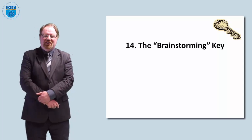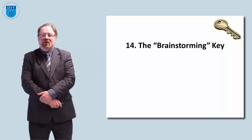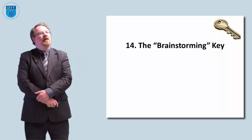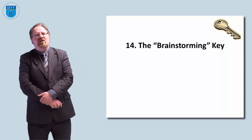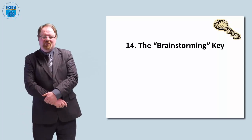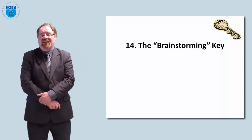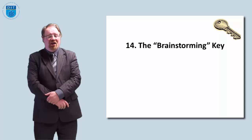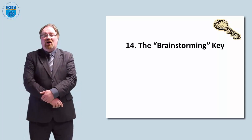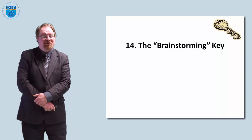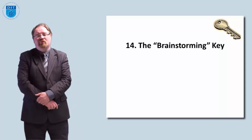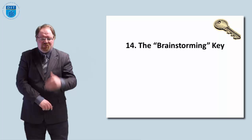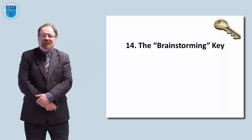The next key is number 14 — it's called the brainstorming key. So it's to state a problem and then brainstorm as many solutions as possible. Let's say the problem is encouraging people to read more books. Maybe we could get the government to ban television for two days a week, pay people to read books, make books very cheap, hide a golden ticket or 500 euro inside one book, or have a monthly free download of popular ebooks. Brainstorm as many variations as possible.